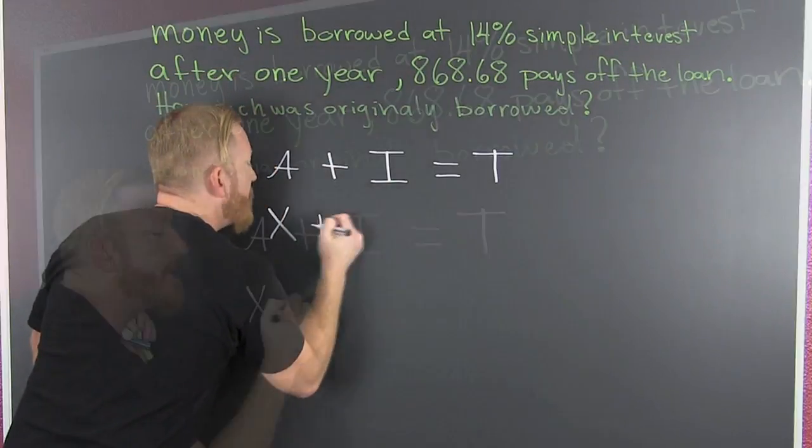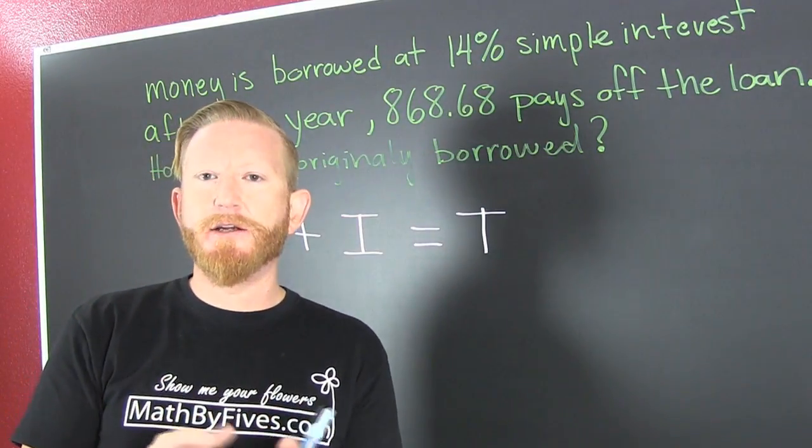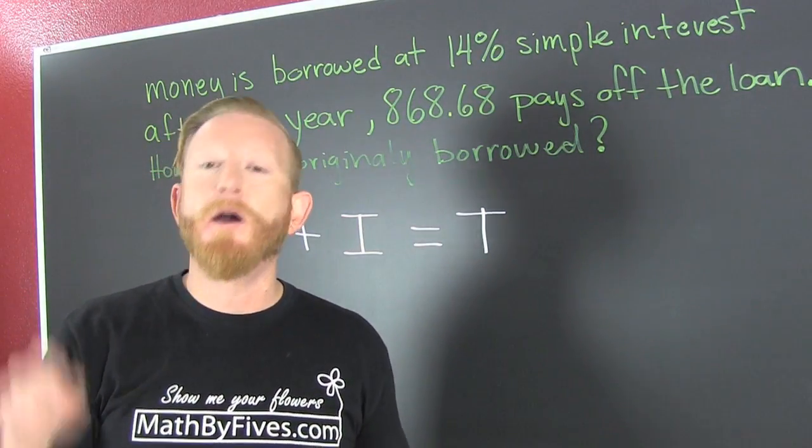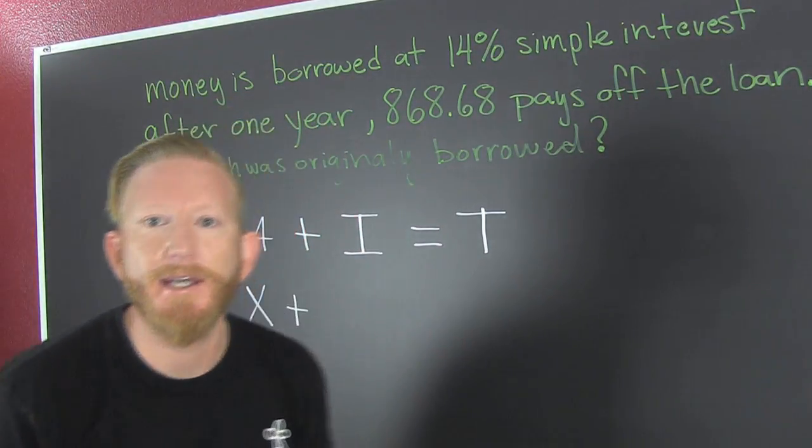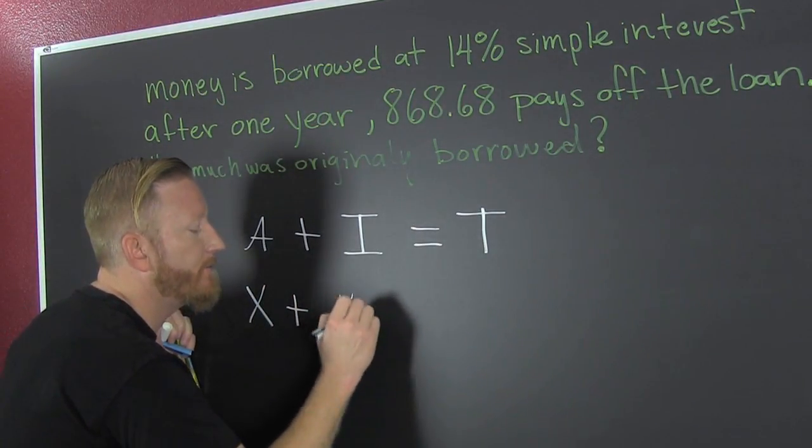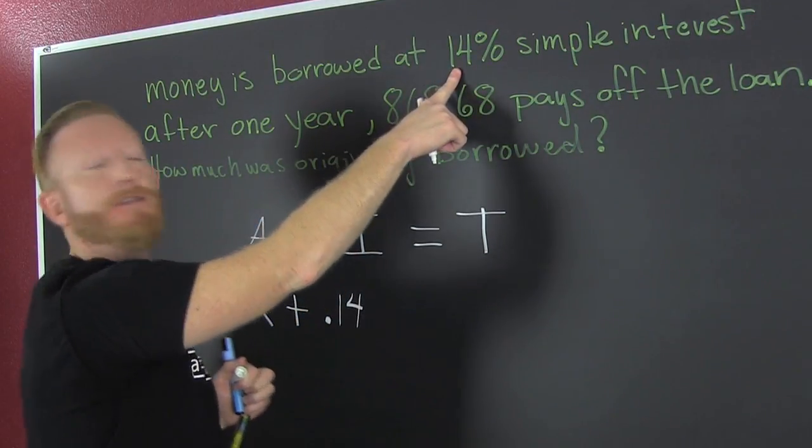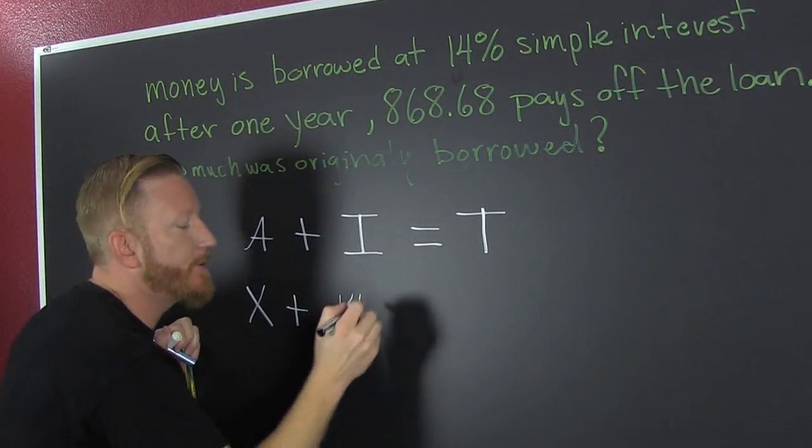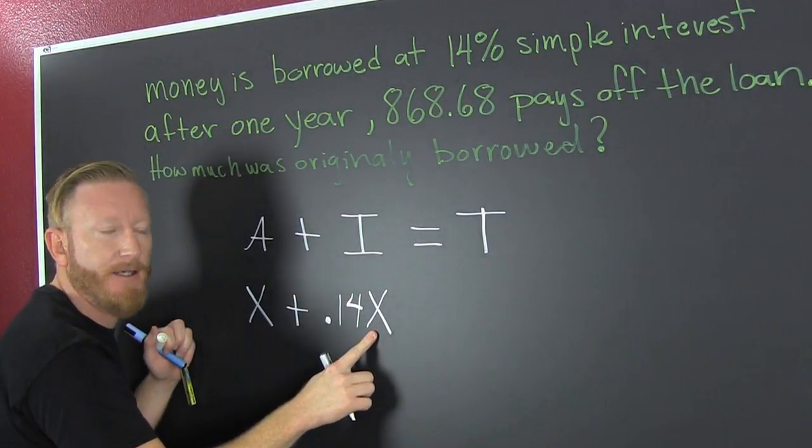So if it's borrowed at 14% simple interest, what does that mean? That means at the end of the year, someone does 0.14 times the amount borrowed because that's what's owed to them, the interest. And that's how you convert a percent into a decimal. It's 14% of whatever was borrowed.